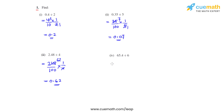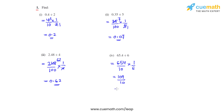Coming to the fourth bit, we have 65.4 divided by 6. So 65.4 can be written as 654 divided by 10. Division is replaced with a multiplication sign and we write the reciprocal of 6, which is 1 over 6. 654 divided by 6 gives us 109, which is to be divided by 10, so the final answer for the fourth bit is 10.9.